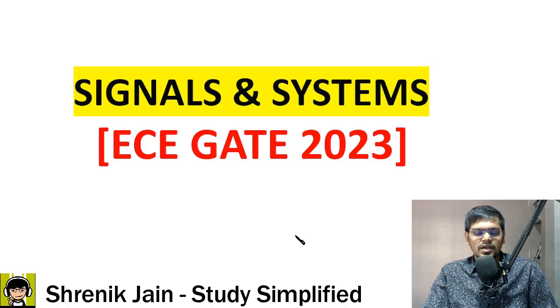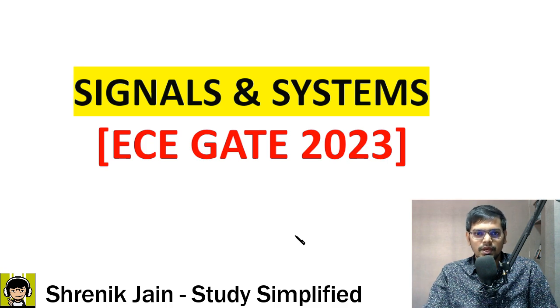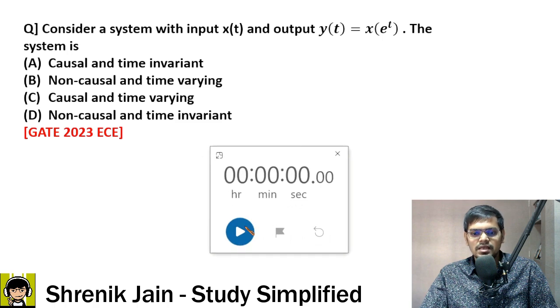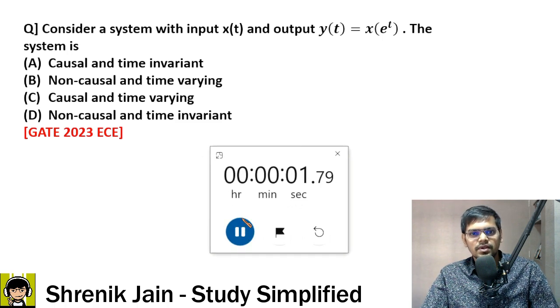In this video we are going to solve signal and system questions which were asked in the GATE ECE 2023 paper. The first question is in front of the screen — a very easy question. I will give only 30 seconds.